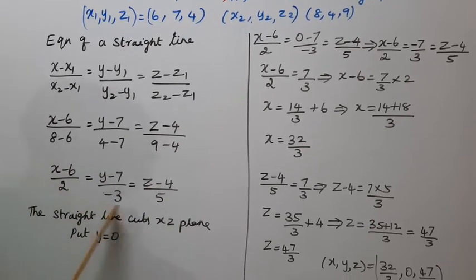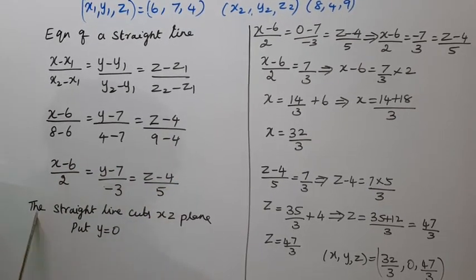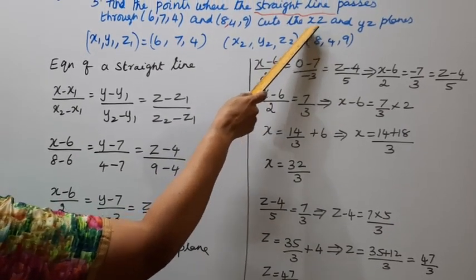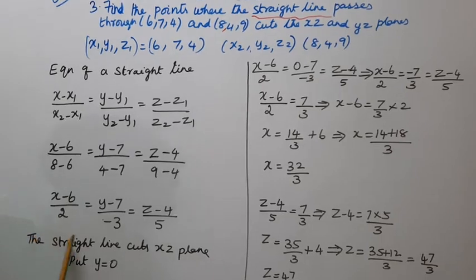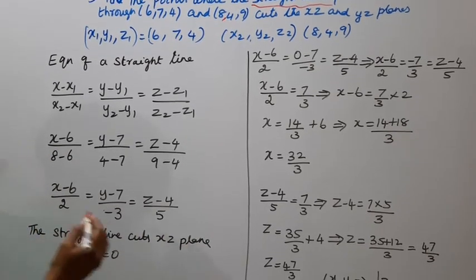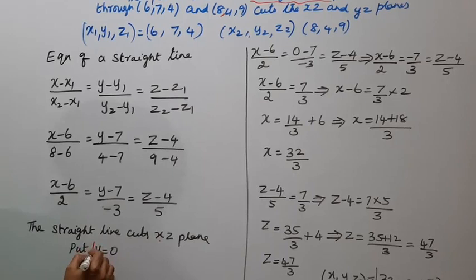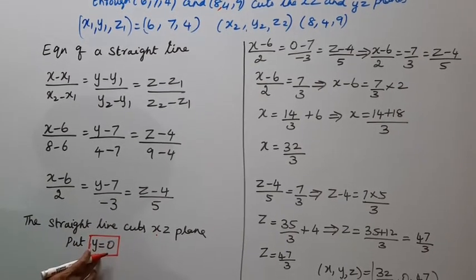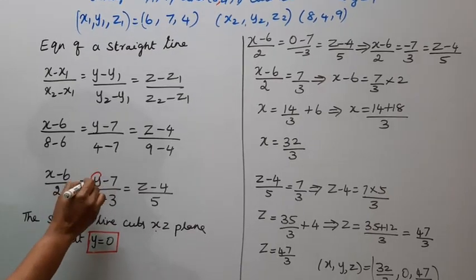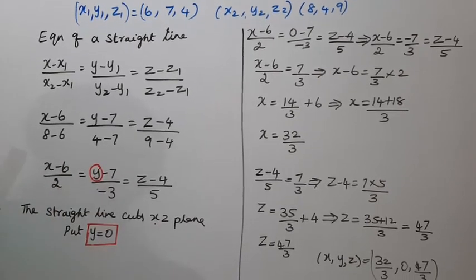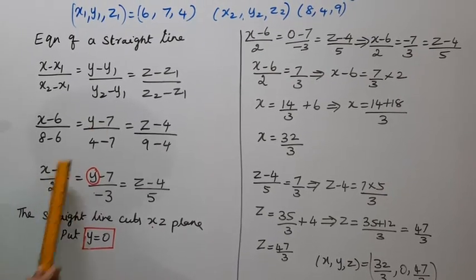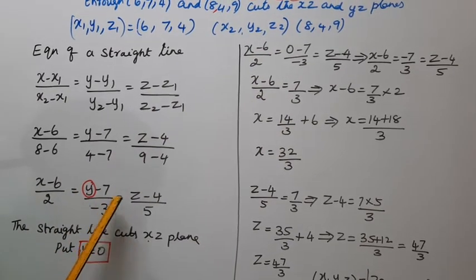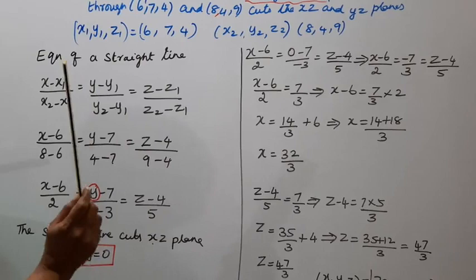Now the straight line cuts the XZ plane. When the line cuts the XZ plane, y equals 0. So we set y = 0: x minus 6 by 2 equal to 0 minus 7 by minus 3, equal to z minus 4 by 5.